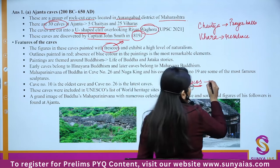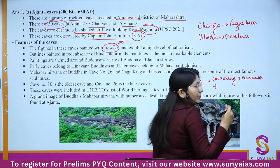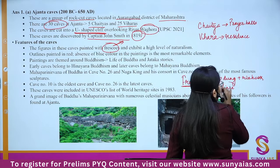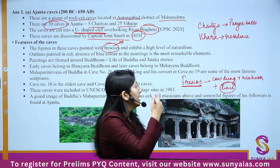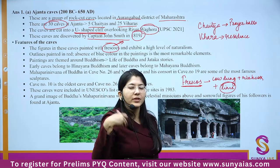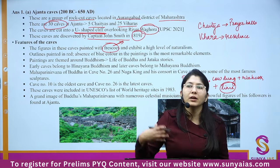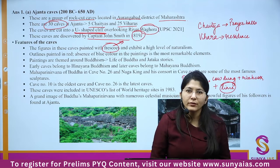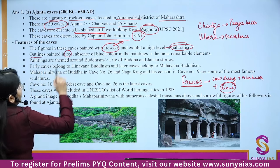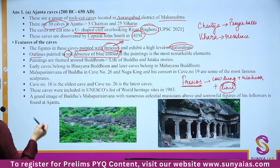At that time, people were surrounded only by nature, so paintings have a high level of naturalism. Outline is in red. Importantly: there was no blue color used in Ajanta paintings — please write that in a box. The theme is Buddhism. You'll find the life of Buddha, Jataka stories, and Avadanas. The early caves belong to Hinayana Buddhism and the later caves to Mahayana Buddhism.